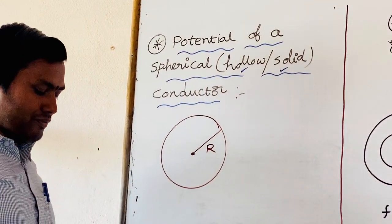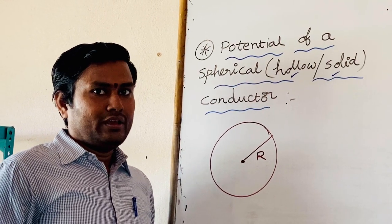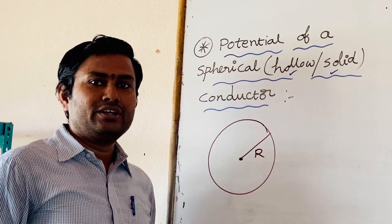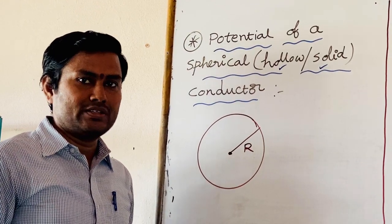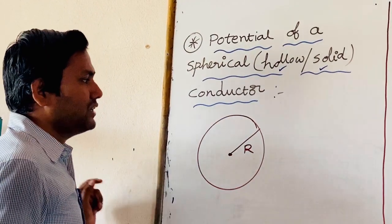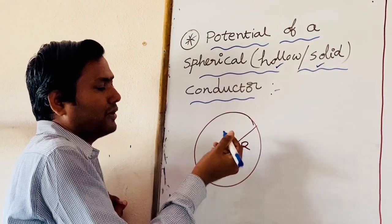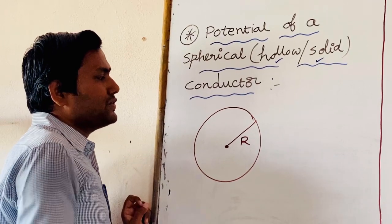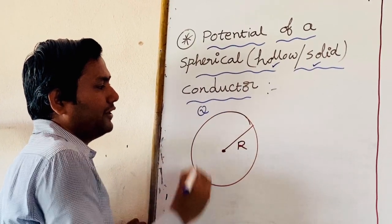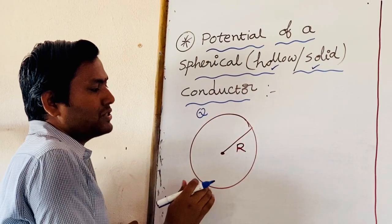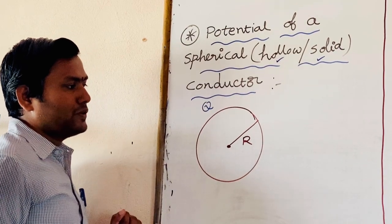Already we know, whatever may be the type of conductor — either solid or hollow — any excess charge given to that conductor completely lies on the outer surface. Suppose we are seeing this hollow conductor, or you can assume solid also. Suppose this conductor is charged with Q; the total charge lies only on this surface.